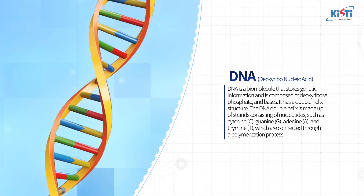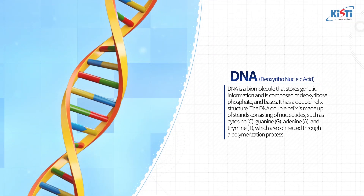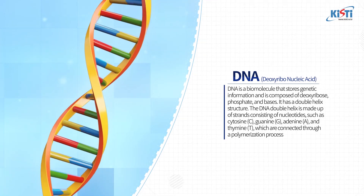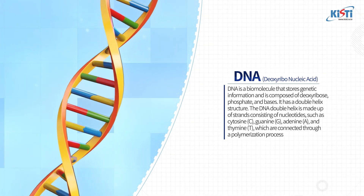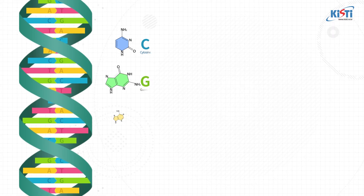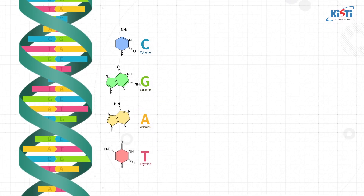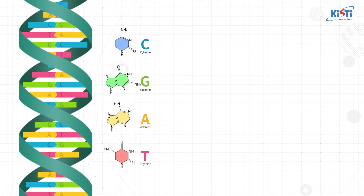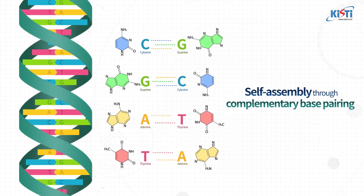DNA, a chemical molecule carrying the genetic information of living organisms, is a helical chain that carries the genetic information of organisms and viruses. A DNA helix consists of four bases — cytosine, guanine, adenine, and thymine — that can be self-assembled through complementary base pairing.